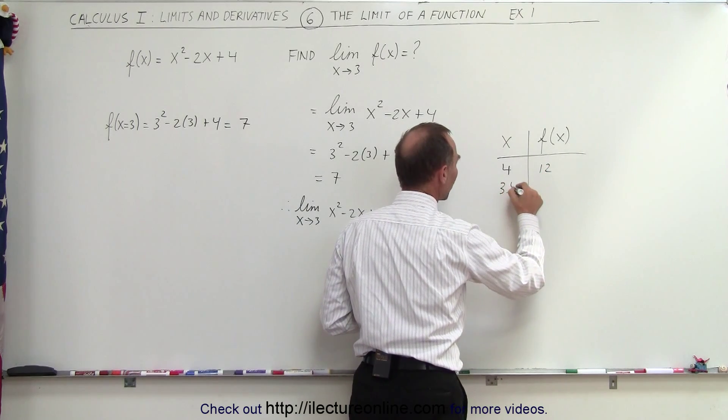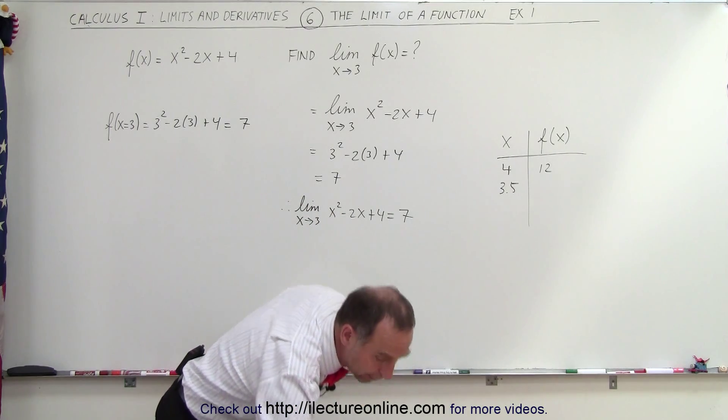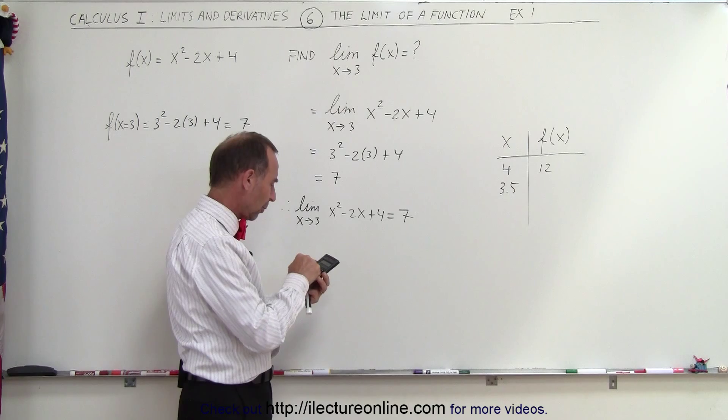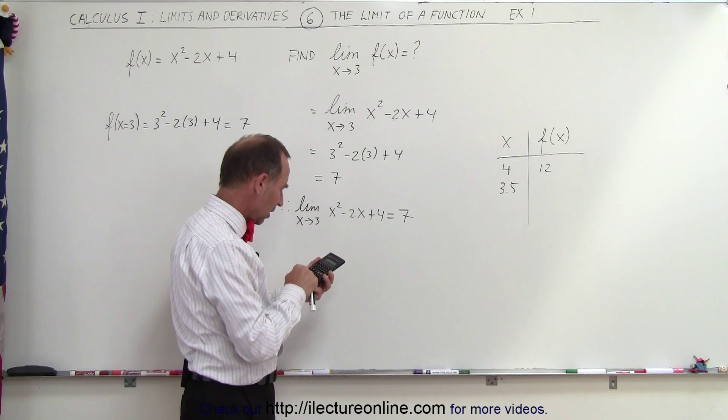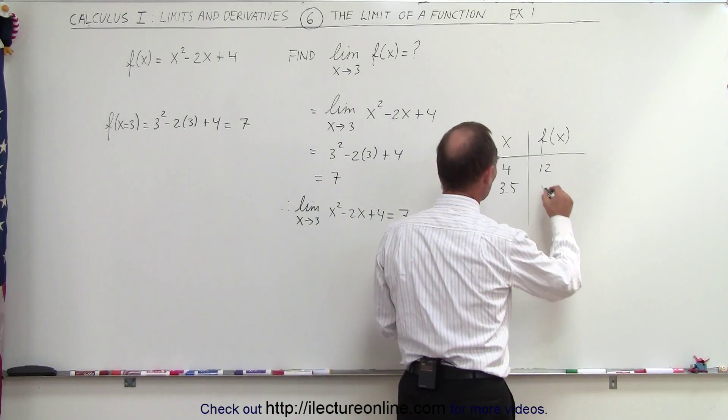What if x is 3.5? What does the function then become? And for that, we probably need a calculator. So let's go ahead. So 3.5², 3.5², minus 2 times 3.5, which is minus 7, plus 4, and we get 9.25.